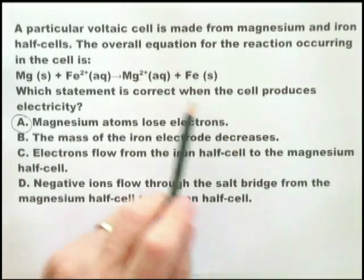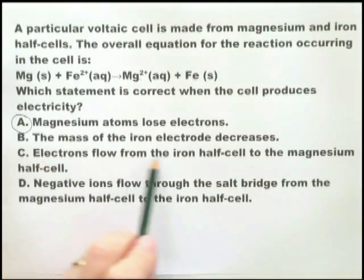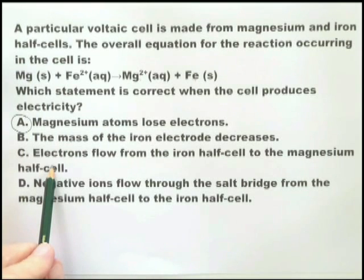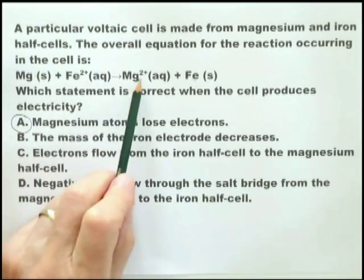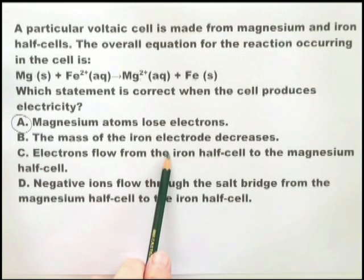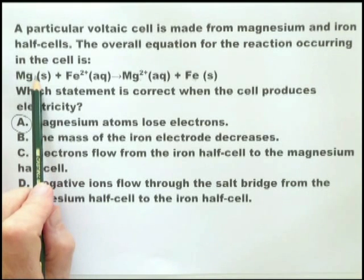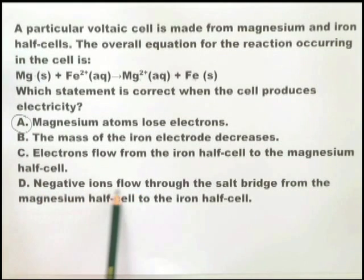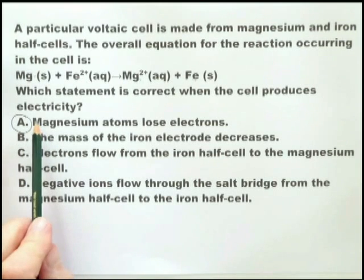'The mass of the iron electrode decreases' — no, according to this, the iron electrode is increasing in mass. 'Electrons flow from the iron half-cell to the magnesium half-cell' — no, they flow from the magnesium cell to the iron cell. The magnesium is losing the electrons, so they flow from that cell. 'Negative ions flow through the salt bridge from the magnesium half-cell to the iron half-cell' — no, if electrons are flowing away from magnesium through the external circuit, then negative ions flow towards it through the salt bridge. So the correct answer is A: magnesium atoms lose electrons.